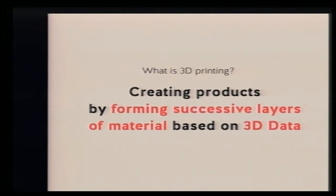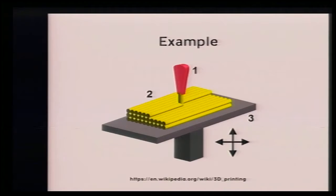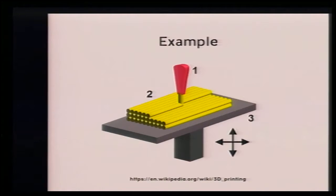3D printing is creating products by forming successive layers of material based on 3D data. This is an example of a 3D printer. This is the most prevailing method of 3D printer, which is called FDM. In this method, a plastic filament is melted to create layers.